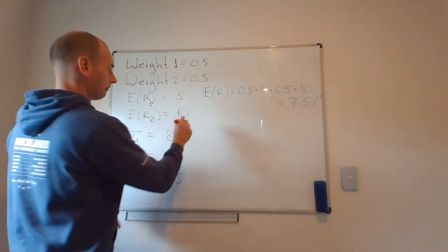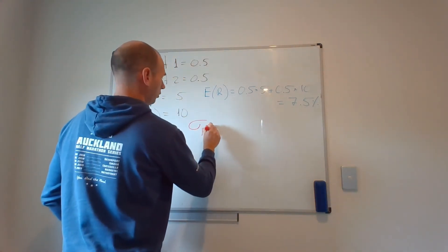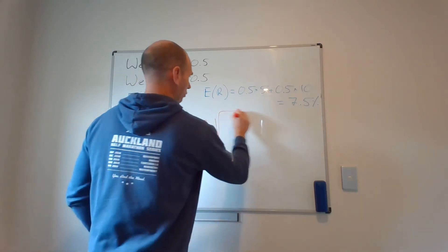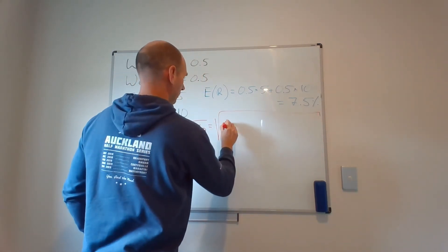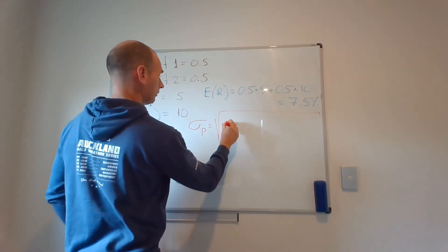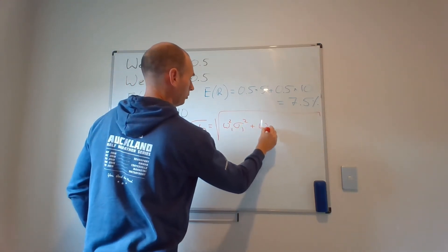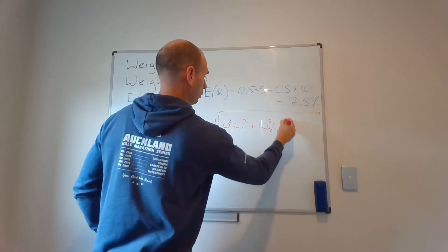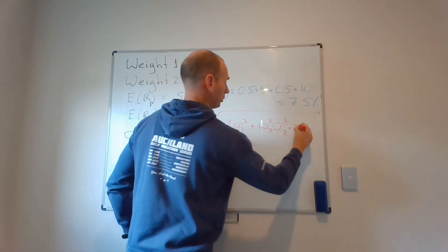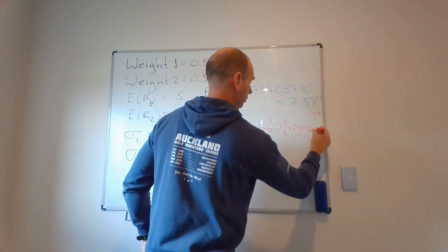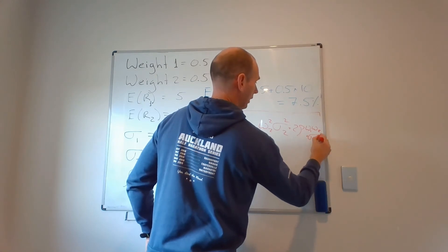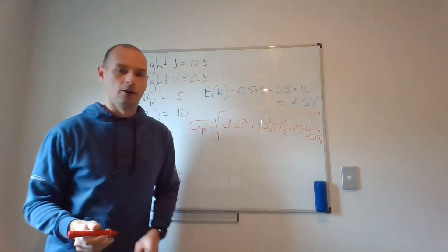But the formula looks like this. So the standard deviation of the portfolio will be the square root of w1 squared sigma 1 squared plus w2 squared sigma 2 squared plus 2 times correlation w1 w2 times sigma 1 sigma 2. Okay.